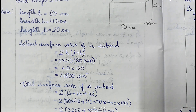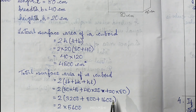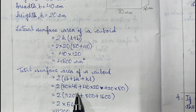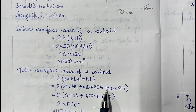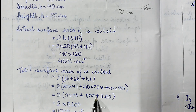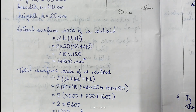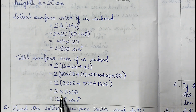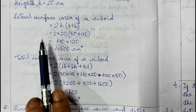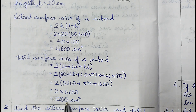Total surface area of the cuboid = 2(LB + BH + HL) = 2(80×40 + 40×20 + 20×80) = 2(3200 + 800 + 1600) = 2 × 5600 = 11200 cm². Therefore, the lateral surface area is 4800 cm² and the total surface area is 11200 cm².